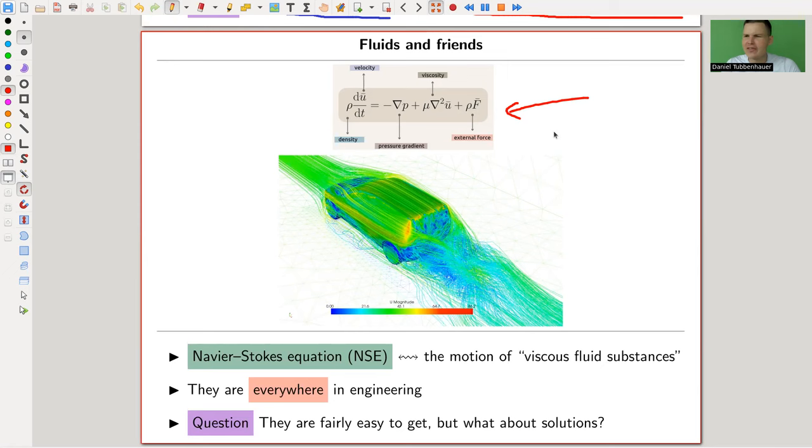Here it is. Don't look at it too closely. It's a differential equation and it's supposed to describe the motion of fluids. For example, it also describes how the air moves around a car or a jet. It's a really important equation in engineering because you want to optimize your car, your jet. But it turns out that the equation is fairly easy to get.